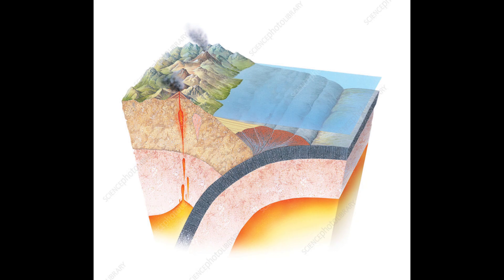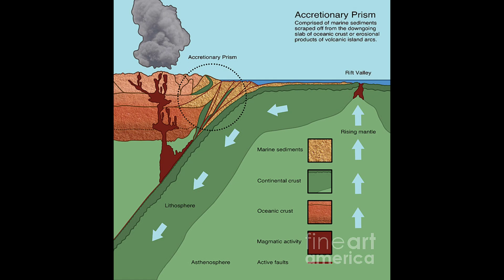In addition to the evidence for thrust faulting in accretionary wedges, structural geologists have documented many examples of normal faults where the tops of the wedges have collapsed, supporting models of extensional collapse of oversteepened wedges.